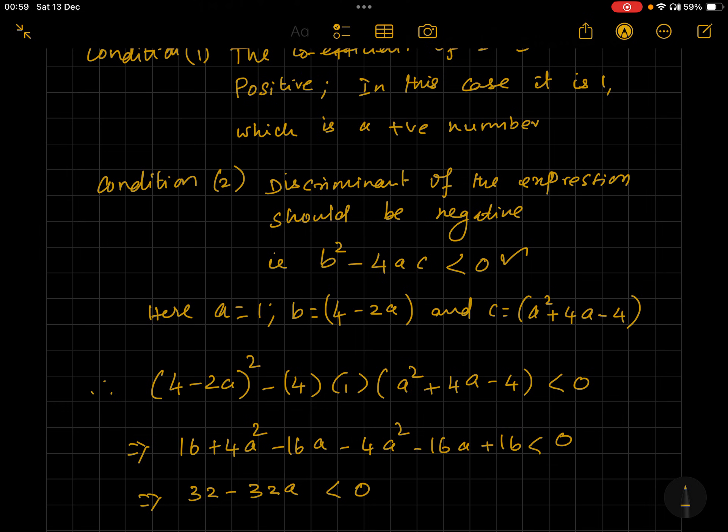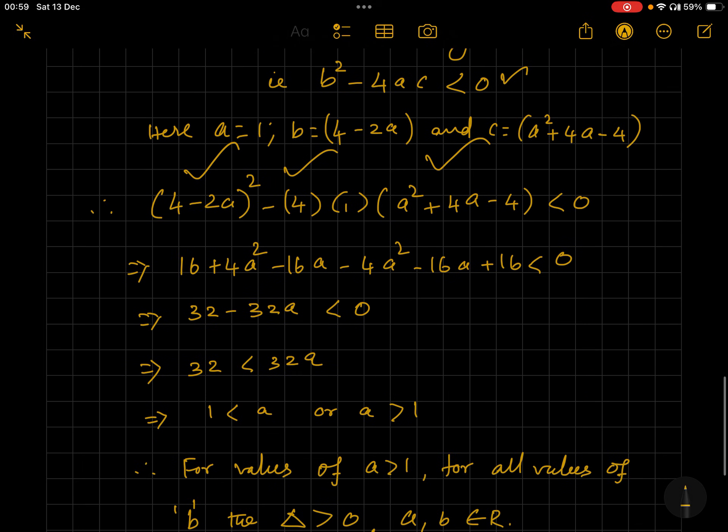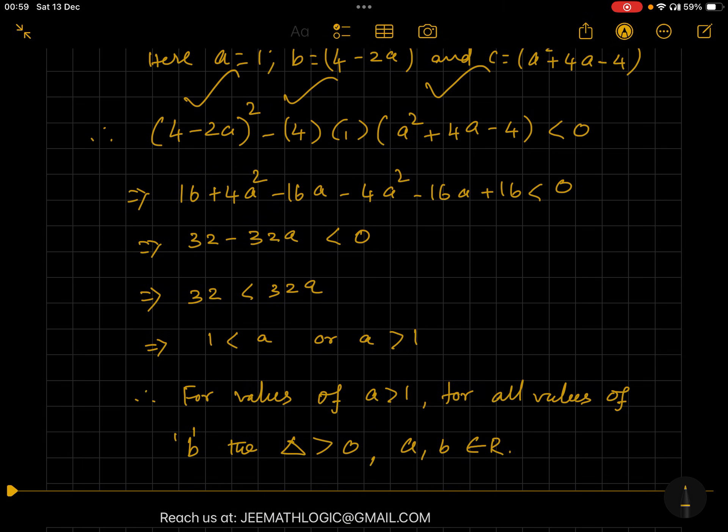we find a > 1. Therefore we can say: whenever a is greater than 1, for all values of b, the discriminant is greater than zero. Therefore the given equation has unequal and real roots. How beautifully it's constructed! You see, generally we always think